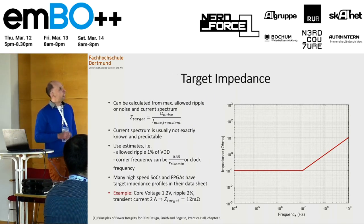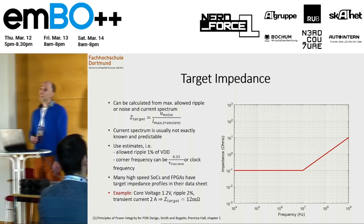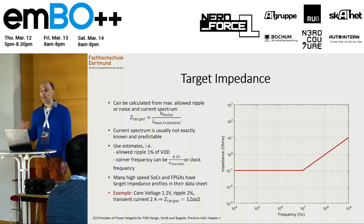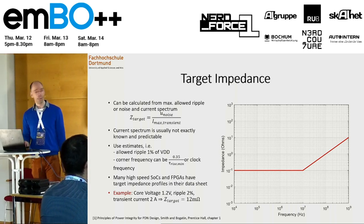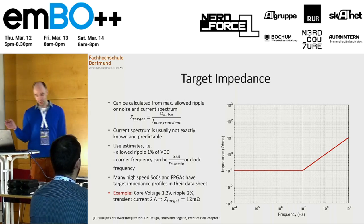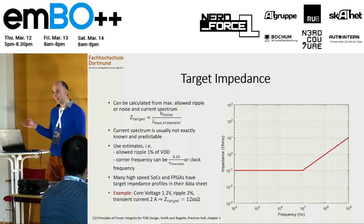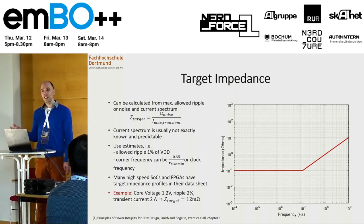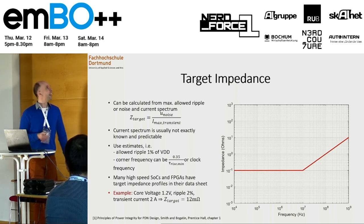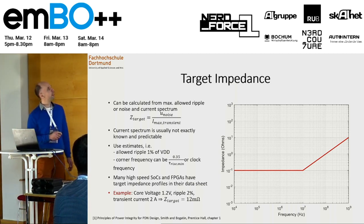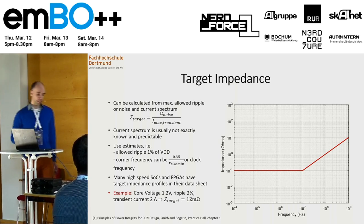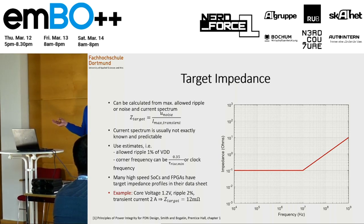The first thing we need to understand when we talk about power integrity is the target impedance, or impedance in general. Since not everybody here is an electrical engineer, let me explain first what impedance is. I think everybody knows Ohm's law. The Ohm's law is basically: impedance equals voltage divided by current. And why is this important for power integrity?